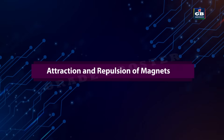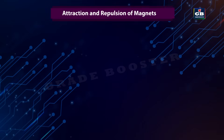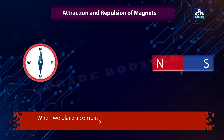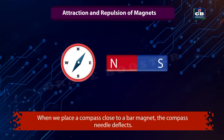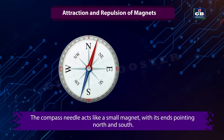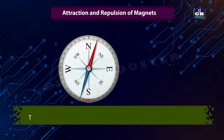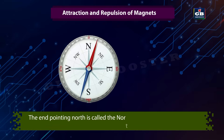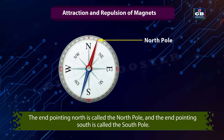The lines formed by the alignment of iron filings represent magnetic field lines. Attraction and repulsion of a magnet. When we place a compass close to a bar magnet, the compass needle deflects. The compass needle acts like a small magnet with its ends pointing north and south. The end pointing north is called the north pole and the end pointing south is called the south pole.